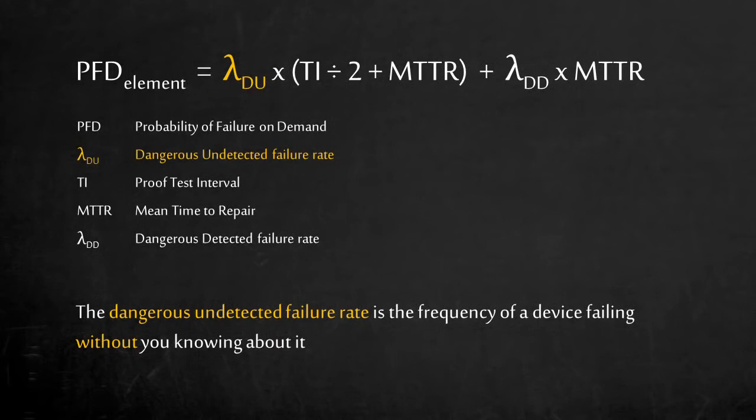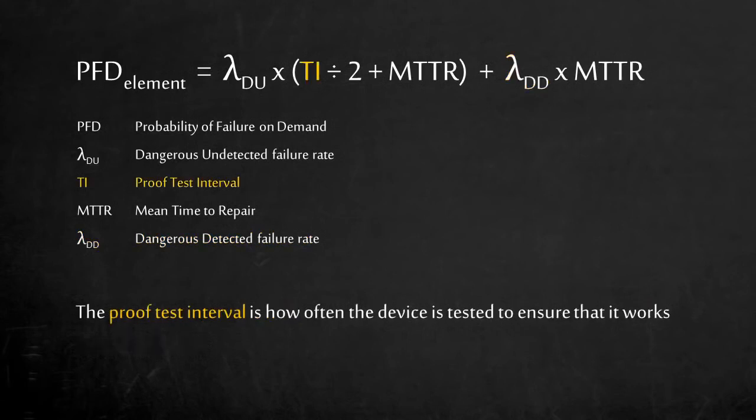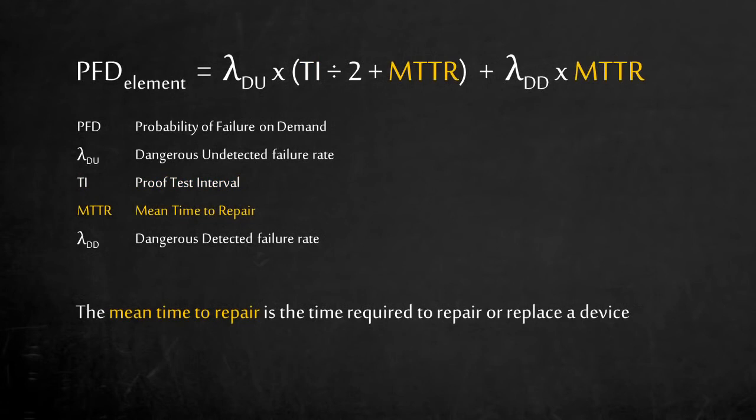The dangerous undetected failure rate is the frequency of a device failing without you knowing about it. It is a hidden failure rate. The dangerous detected failure rate is the frequency of a device failing with diagnostics to alert you of a fault in the system. The proof test interval is how often the device is tested to ensure that it works. The mean time to repair is the time required to repair or replace a device.